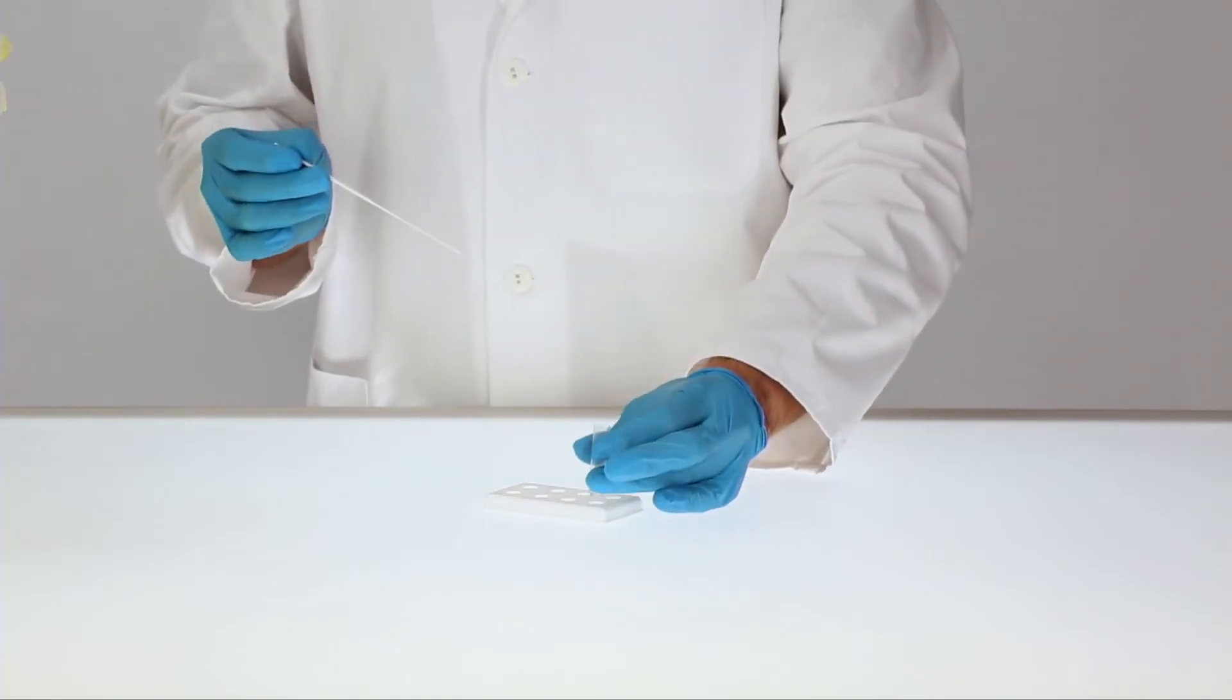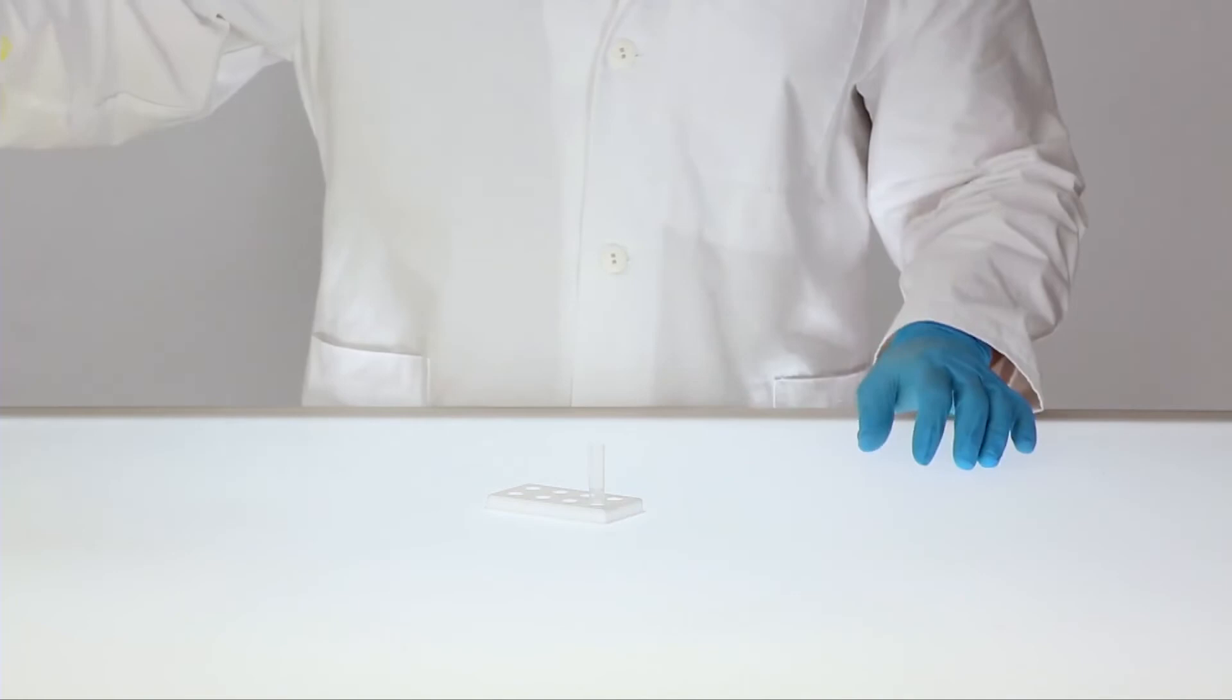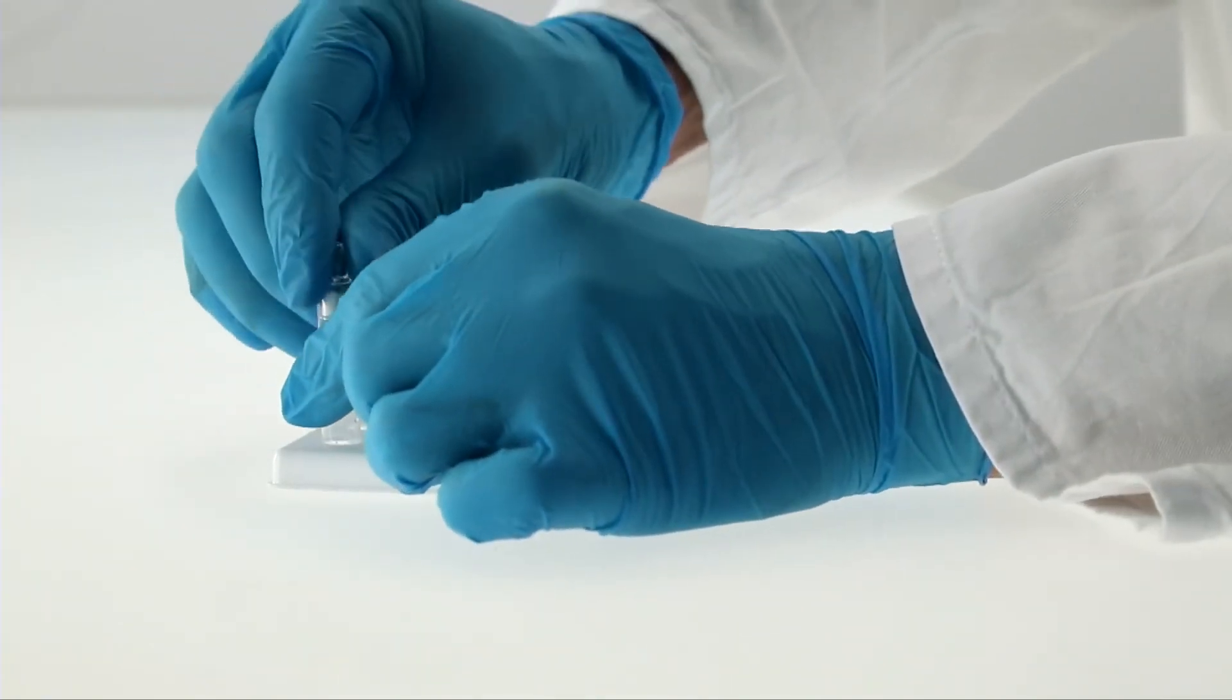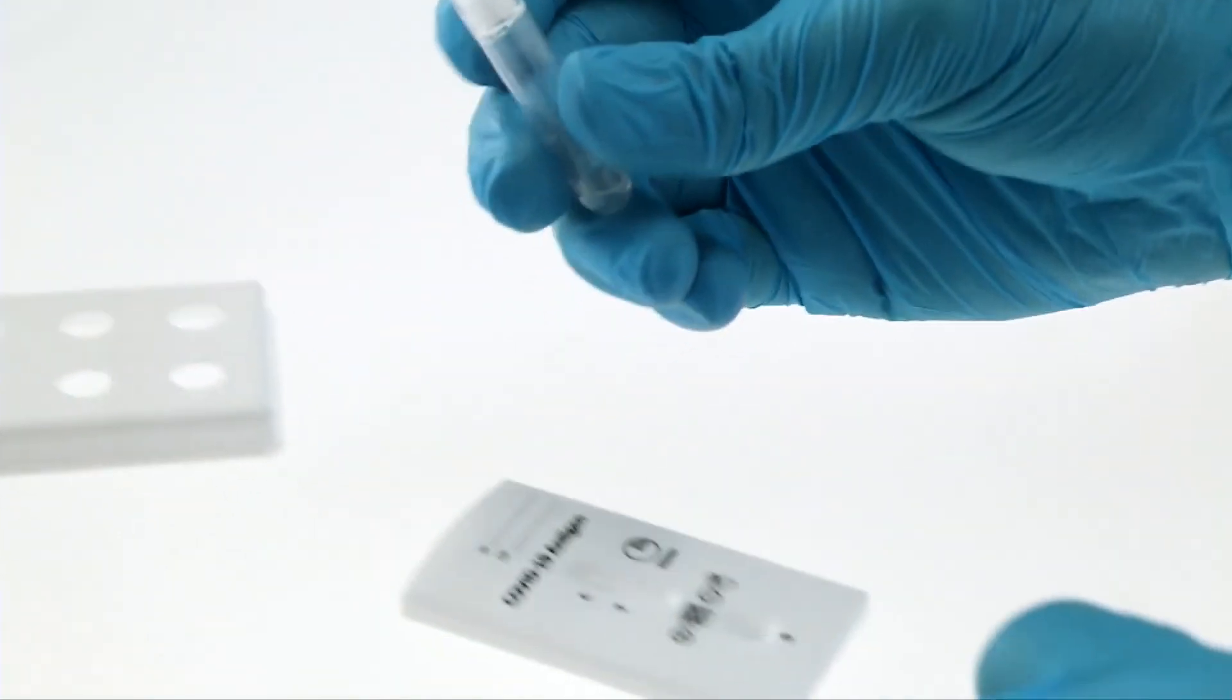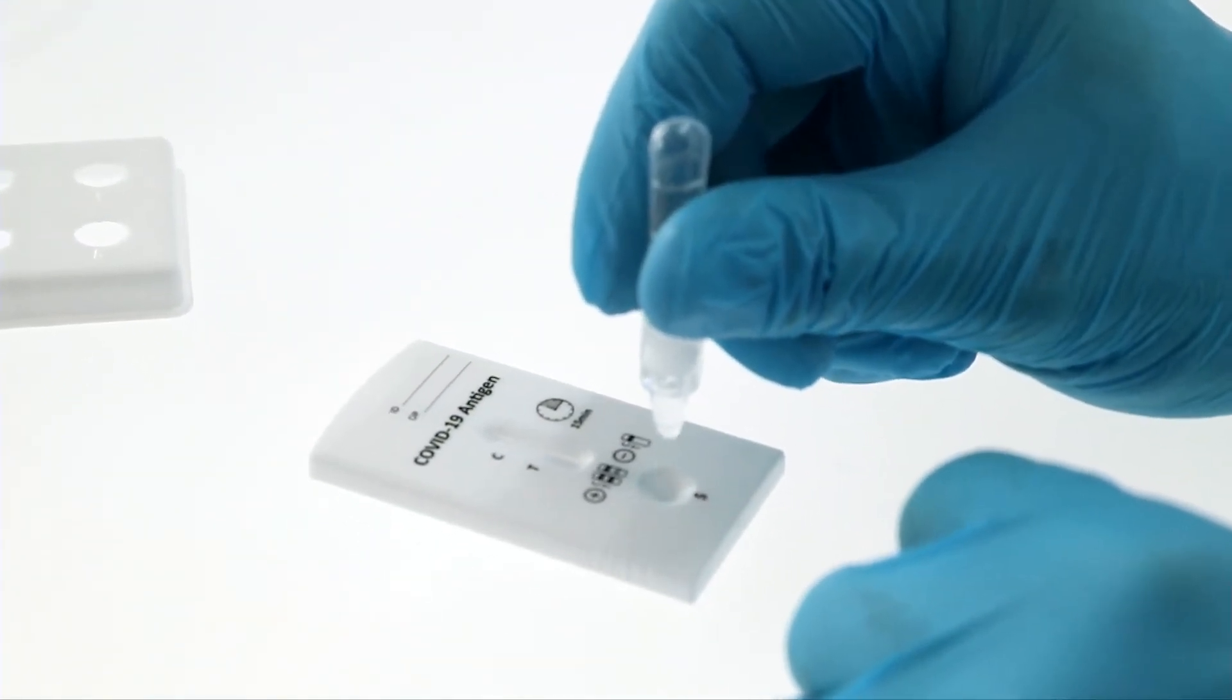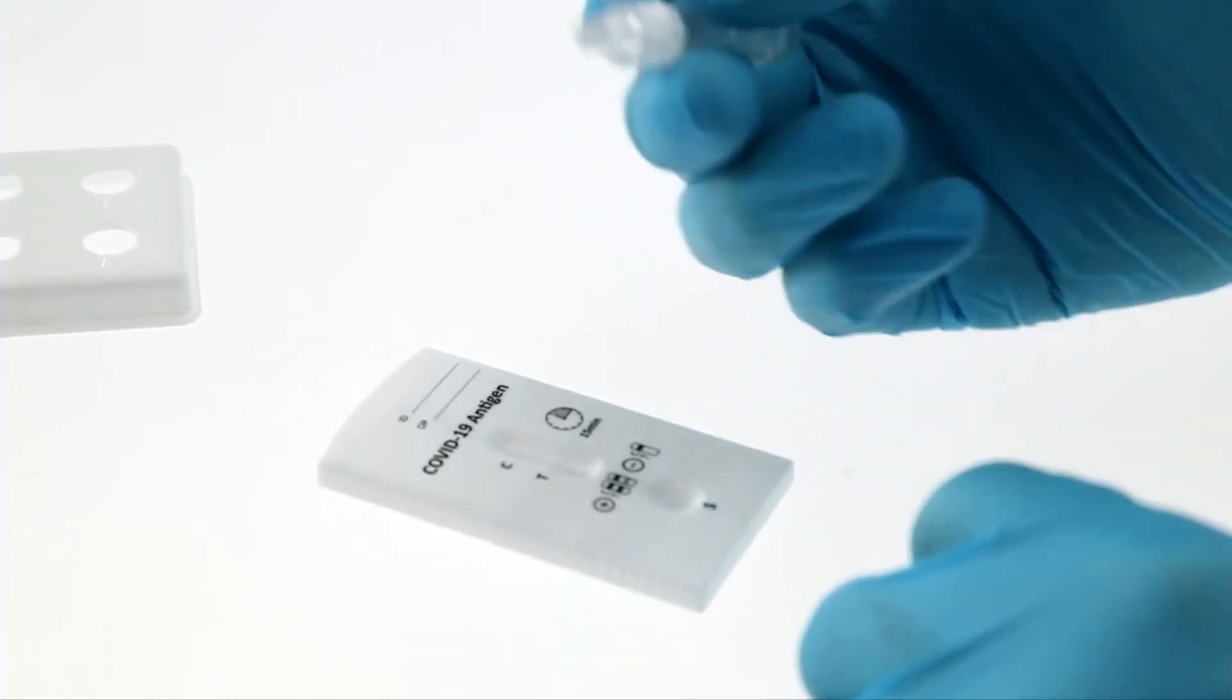When removing the swab, squeeze out as much liquid as possible. Attach a dropper cap to the extraction tube, invert the tube and transfer 2 drops of the extracted solution to the specimen well of the test cassette.